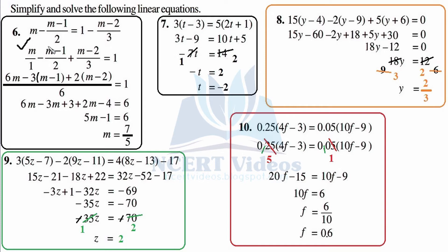The important point to note from this question is that we need not write steps again and again — certain things we are comfortable with can be done in our mind and written directly. Question number 7: 3 is getting multiplied with (2t minus 3) on the left-hand side equals 5 is getting multiplied with (2t plus 1) on the right-hand side.